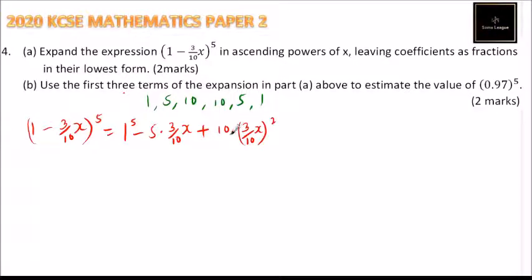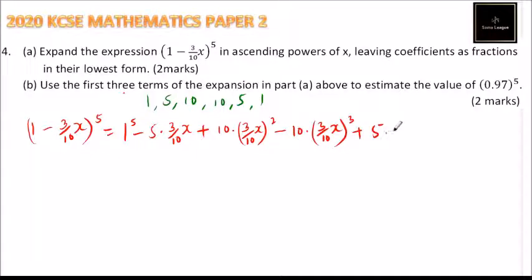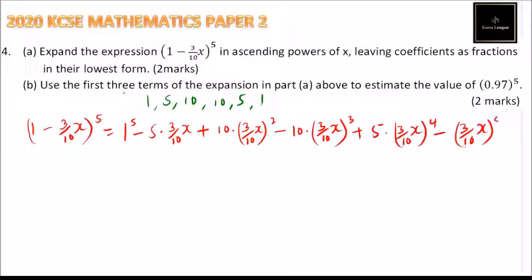Here 1 raised to the power of 3 makes no difference, because 1 raised to any power is still 1. So we have minus 10 times 3 over 10 x raised to the power of 3. Then we have plus 5 times 3 over 10 x raised to the power of 4. And finally, we have minus 3 over 10 x raised to the power of 5.